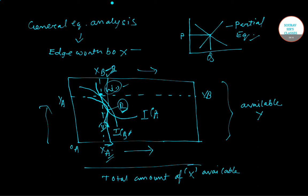An optimal allocation of commodities is determined by the concept of Pareto optimality. A Pareto optimal allocation is one where it is not possible to make one person better off without making any other person worse off. The condition for Pareto optimality is MRS_A equals MRS_B. This is also consistent with the competitive equilibrium price.